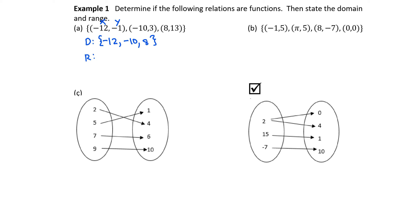The range is the set of all y values, or the second component of each ordered pair. So the range contains values negative 1, 3, and 13. Now let's determine if this is a function. Does every unique input — negative 12, negative 10, and 8 — have a unique y value? In this case, yes, every x has exactly one y. So yes, this is a function.